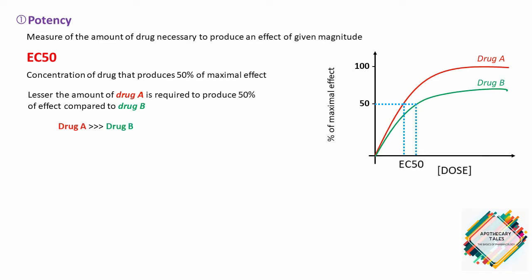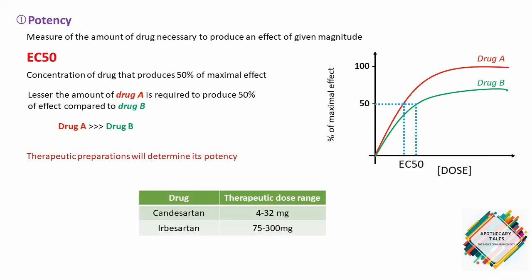Therapeutic preparations also play a very important role in potency. For example, Candesartan and Irbesartan are angiotensin receptor blockers used to treat hypertension. The therapeutic dose range for Candesartan is 4 to 32 mg, compared to 75 to 300 mg for Irbesartan. Since a lower dose range is required to produce the same effect, Candesartan is more potent.